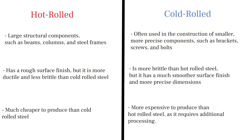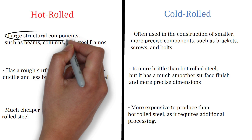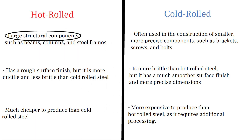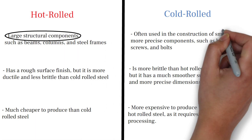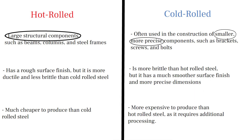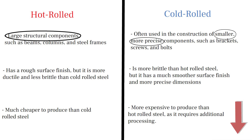Hot rolled steel is typically used for the production of large structural components, while cold rolled steel is often used for the production of smaller, more precise components. If you are interested in learning more about construction, be sure to check out our playlist in the description for more informative videos.